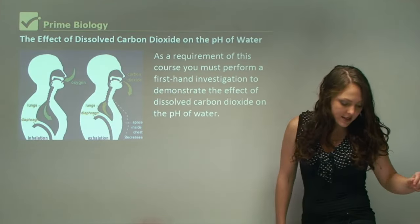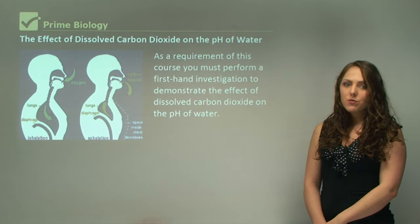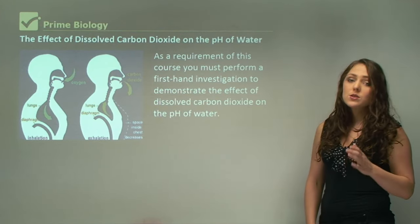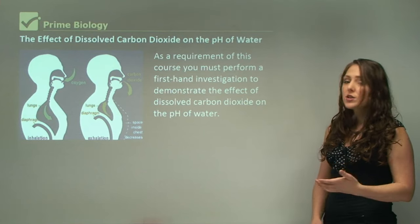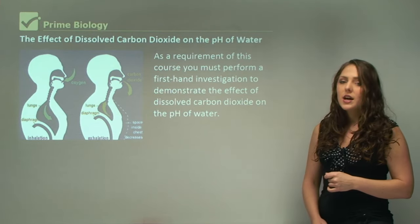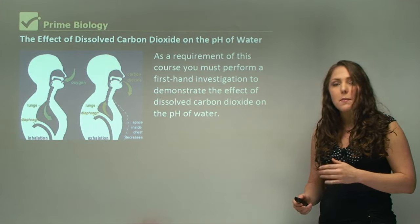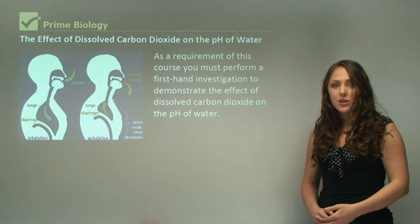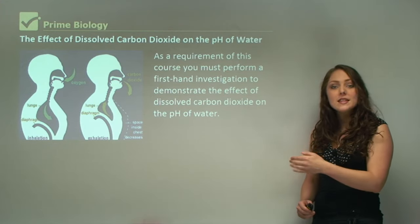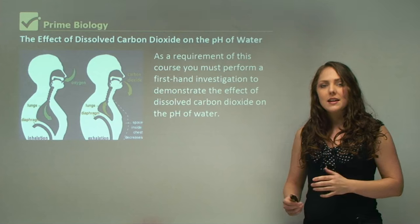This is the experiment on the effect of dissolved carbon dioxide on the pH of water. As a requirement of this course, you must perform a firsthand investigation to demonstrate the effect of dissolved carbon dioxide on the pH of water. A firsthand investigation means any experiment that you perform yourself. So it may not necessarily be this one, but you need to perform an experiment to show that you understand pH.